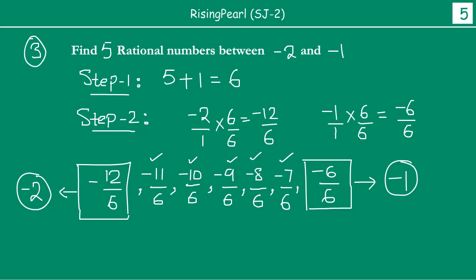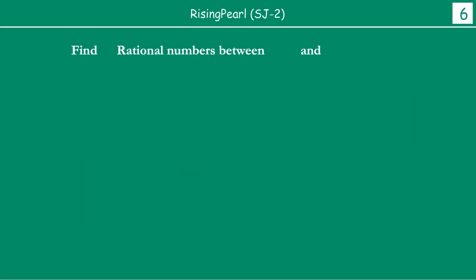Now, we will probably do one or two more examples before we wrap up. Let's take one more example. It is called example number 4. This time, let us find out four rational numbers between 5 and 6. Between 5 and 6, how do we find four rational numbers? How do we do it?